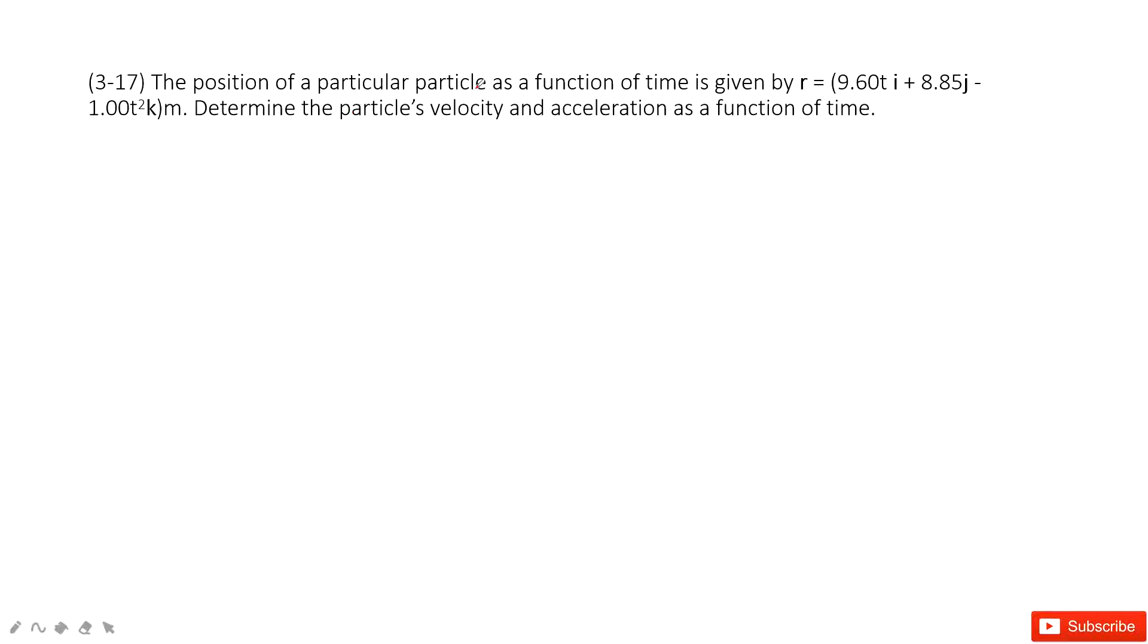This is the problem. It gives us a function, the position as a function of time, and it writes in this way. We can see the three components i, j, k. In the i component, it changes with time t.